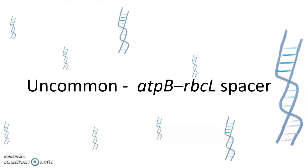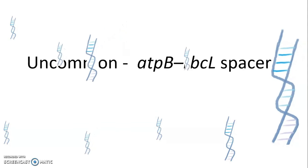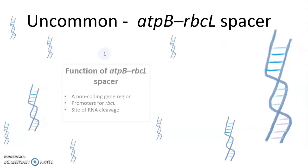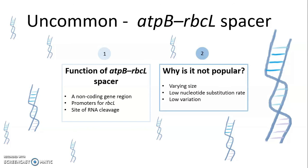Another unpopular gene is atpB to rbcL spacer. It is a non-coding gene region which acts as promoters for rbcL and site of RNA cleavage. The reason that it is not popular is it has different sizes in different organisms, so it's difficult to be used. And it also has low substitution rate and lack of informative variation site to differentiate species.